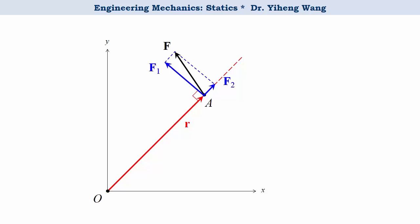In other words, component force F2 does not create any moment about point O because its own line of action passes through point O. Therefore, the total moment can be easily calculated to be M equals F1 times R.